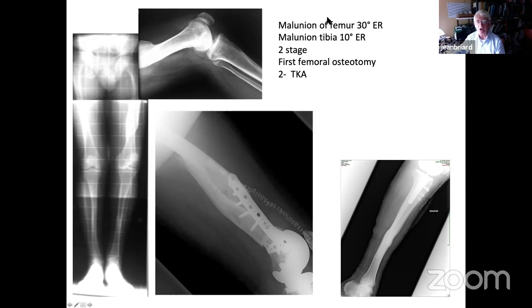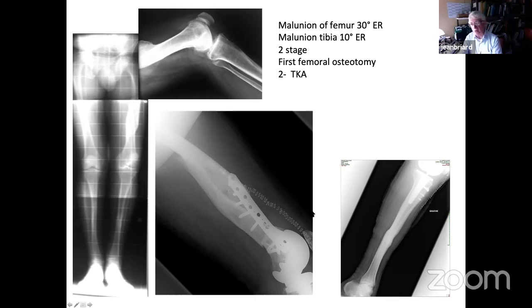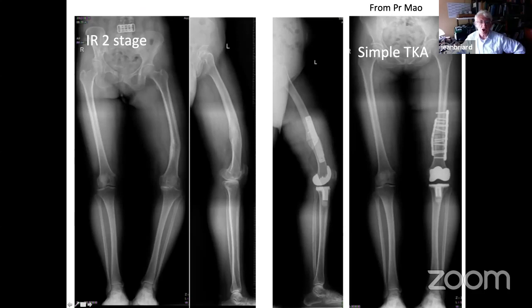Sometimes a surgeon may decide to correct the deformity first in a staged approach. One case had a malunion with 30 degrees of external rotation — osteotomy was done, plate applied, and after waiting for healing, TKA was performed as a second stage with good functional result. If you are not very experienced with femoral osteotomies — which are not easy — tibial ones are okay. A staged approach by Professor Mao in Changsha: osteotomy first with a nice correction, then second-stage primary knee with good functional result.